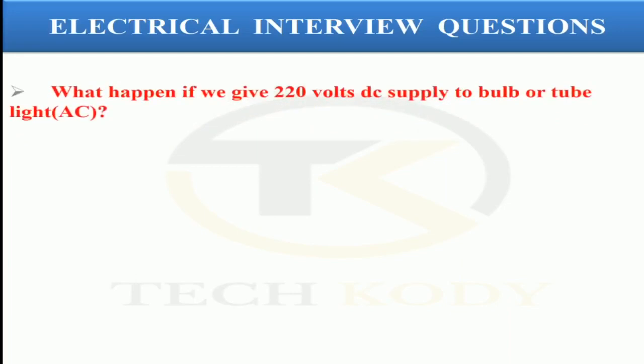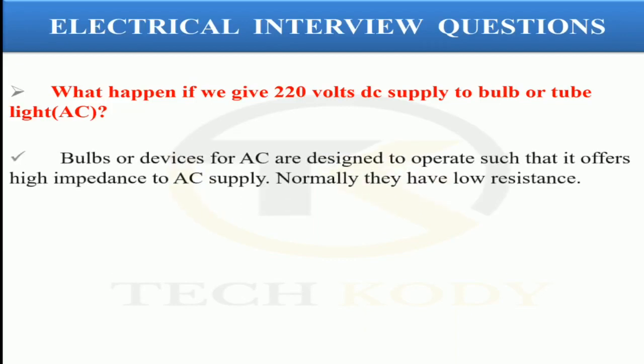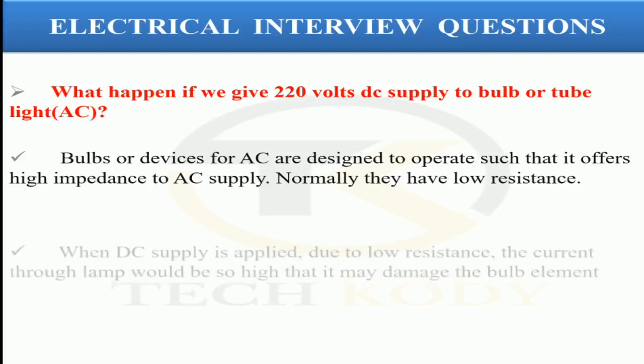The next question is: what happens if we give 220 volts DC supply to a bulb or tube light? Generally, AC devices are designed for high impedance to AC supply. Normally they have low resistance. When DC supply is applied to the low resistance, the current through the lamp will be so high that it will damage the bulb element.